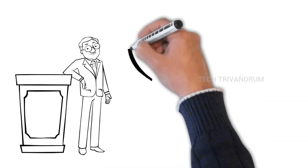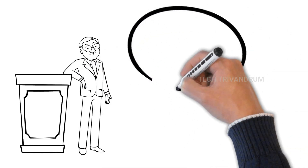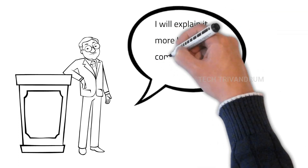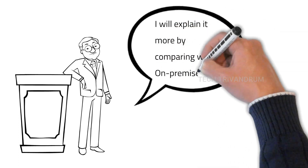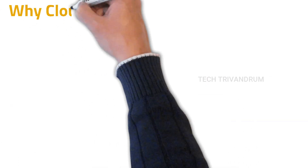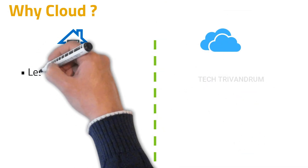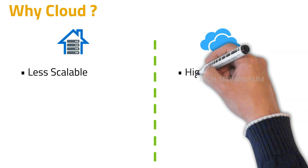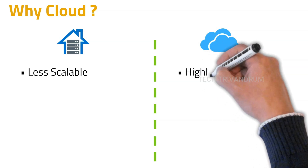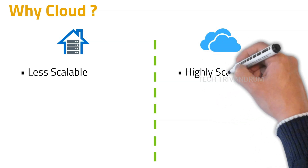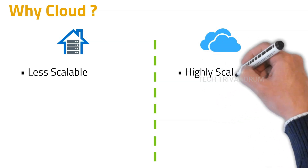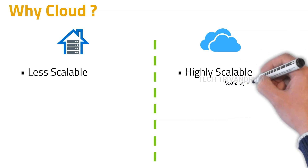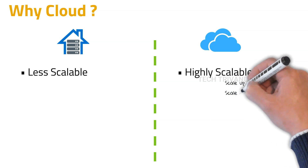Jeff decided to explain the cloud computing model by comparing it with the on-premises setup so that Adam would get a clearer idea. In the on-premises setup, the scalability option is very low. But on the cloud, scalability is very high — when the requirement is high, we can scale up the resources, and when the requirement is low, we can scale down. And we have to pay only for the resources we use at that instant.